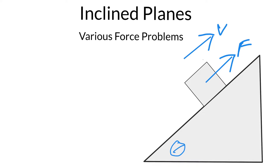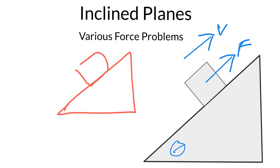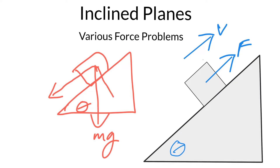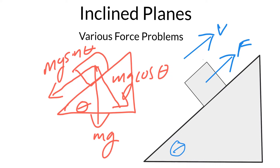Today we're going to look at various force problems on an incline plane. This is not an intro video — I expect you to know the basics of an incline plane. For example, if we have a mass and an angle theta, gravity pulls straight down and you should be able to resolve it into components: mg sine theta pulling down the ramp, and mg cosine theta perpendicular to it. If that was confusing, go back and watch one of my previous videos.